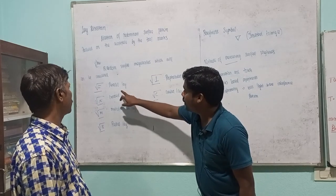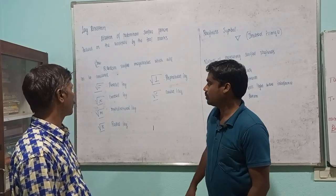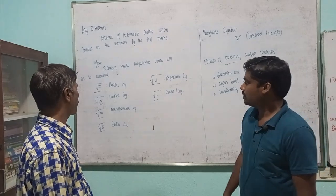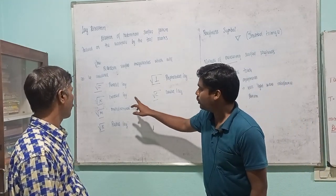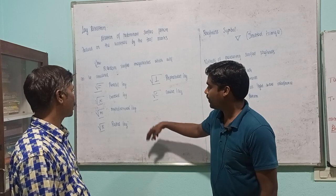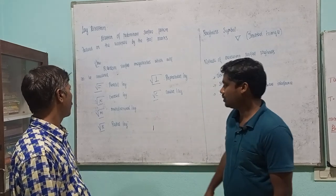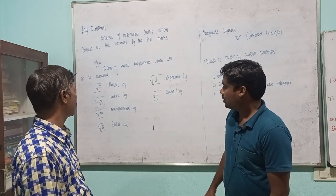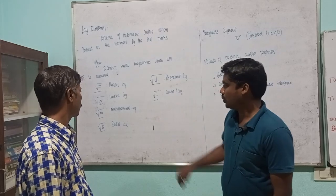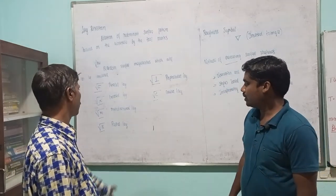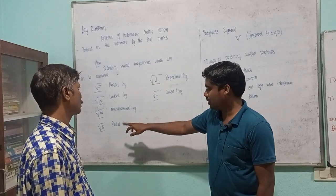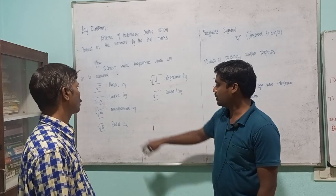The parallel layer symbol is equal to (=). Crossed layer symbol is equal to (X). Multi-directional layer symbol is M. Radial layer symbol is R.